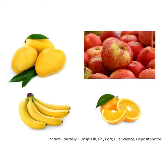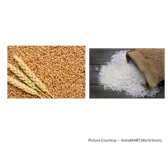We get fruits like mangoes, apples, banana, oranges from plants. We get cereals from plants — cereals like wheat and rice. Chapati are made from wheat.